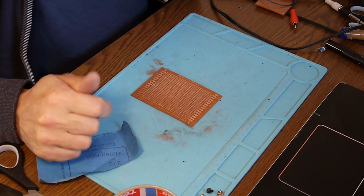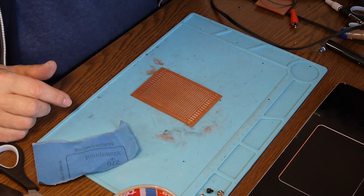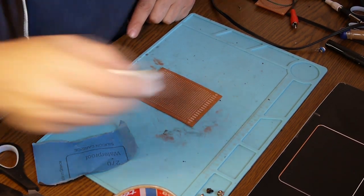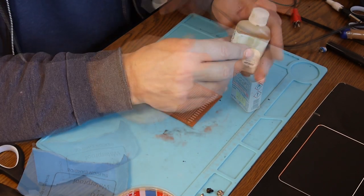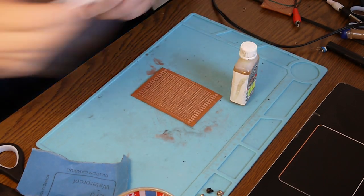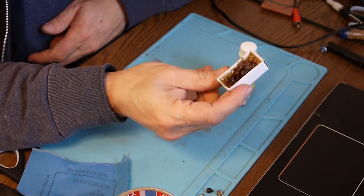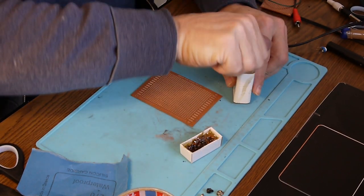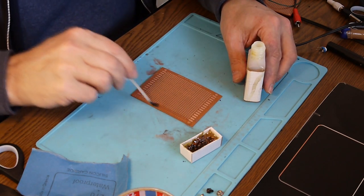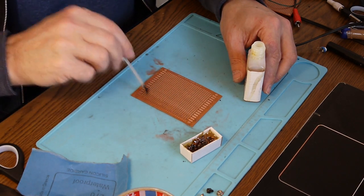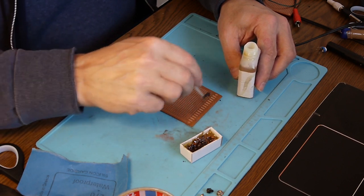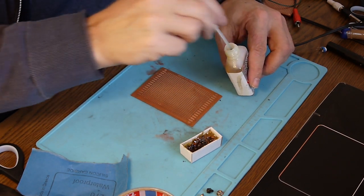Afterwards I'm using a kind of flux I made myself with some isopropyl alcohol and rosin. This is a very light flux but it's very nice because it covers all the copper surfaces.